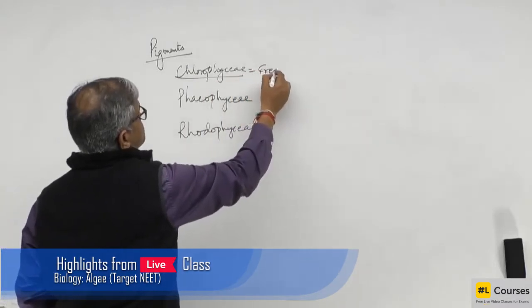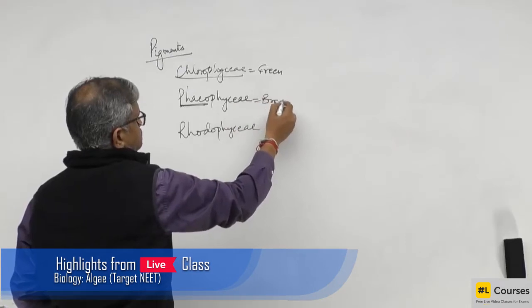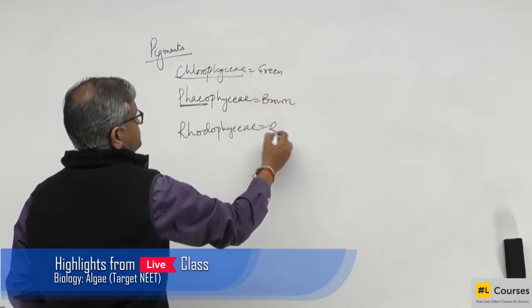Chlorophyceae is green as the name itself suggests. Pheo means brown, rhodo means red.